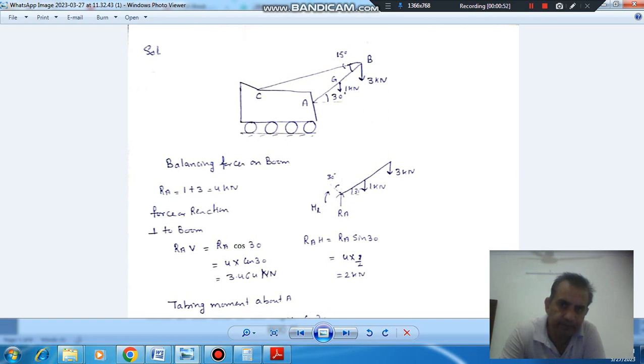And if we consider the equilibrium of the boom, then the forces acting on the boom are 6 kN, 1 kN, and RA. And RA is the reaction at A.